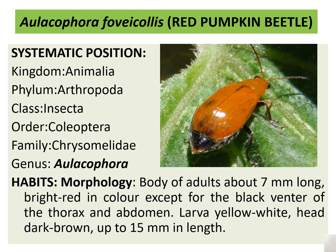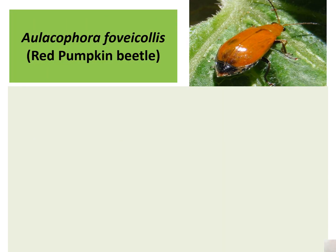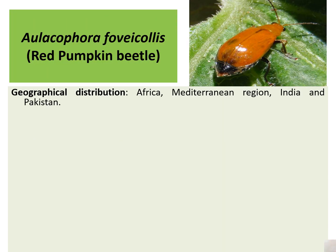The morphology includes: the body of the adult is about 7 mm long, bright red in color except for the black venter of the thorax and abdomen. The larva is yellow-white with a dark brown head, up to 15 mm in length.